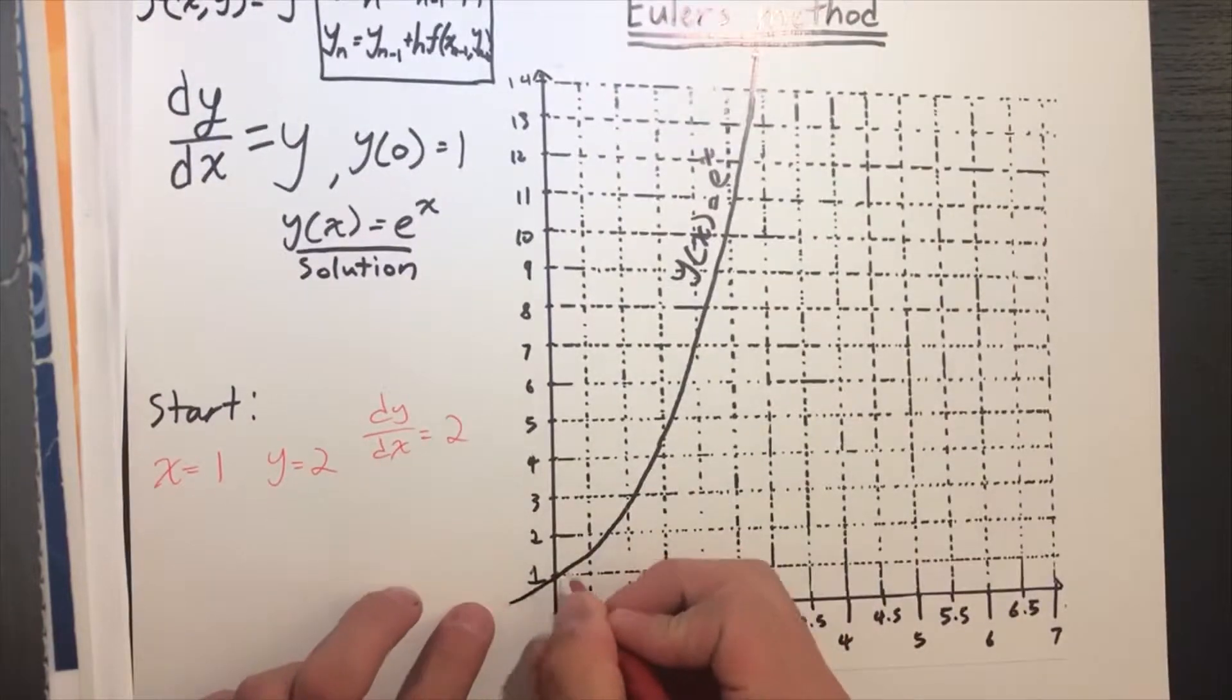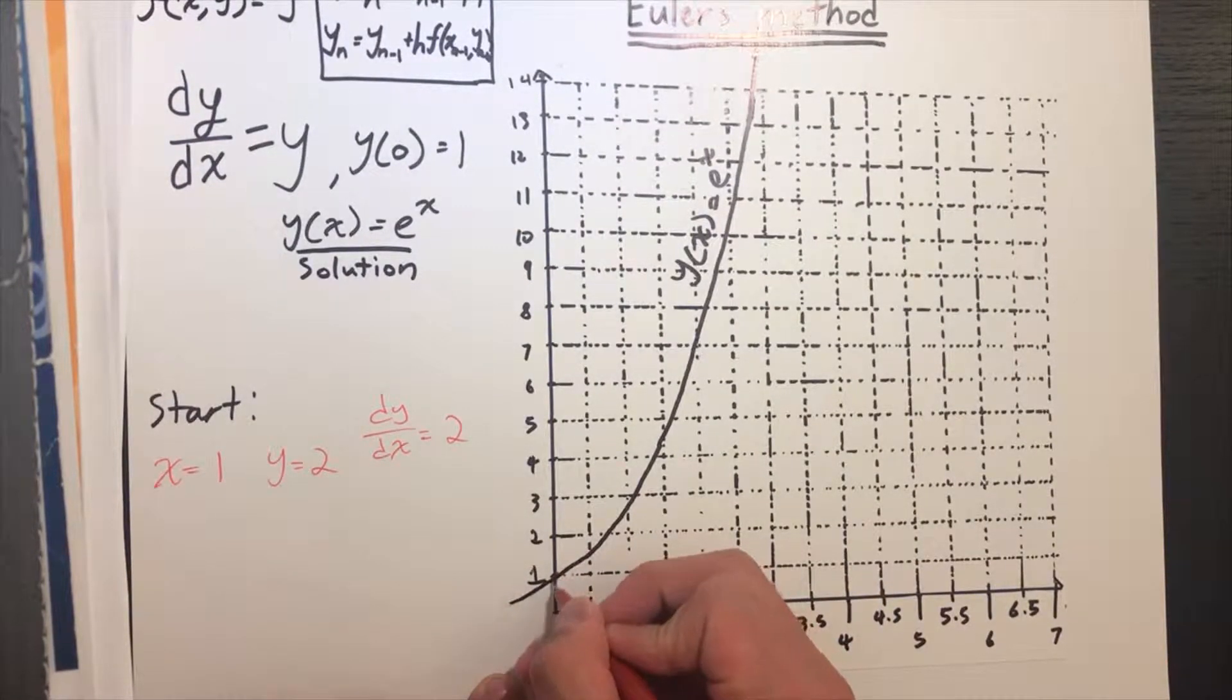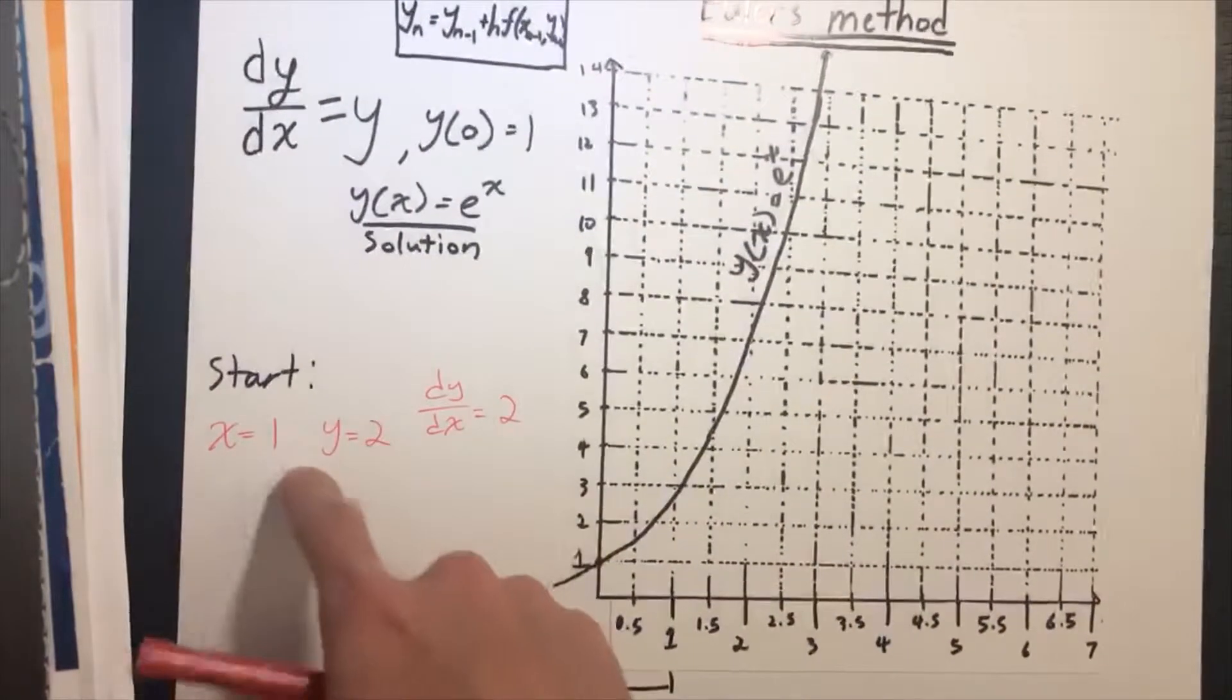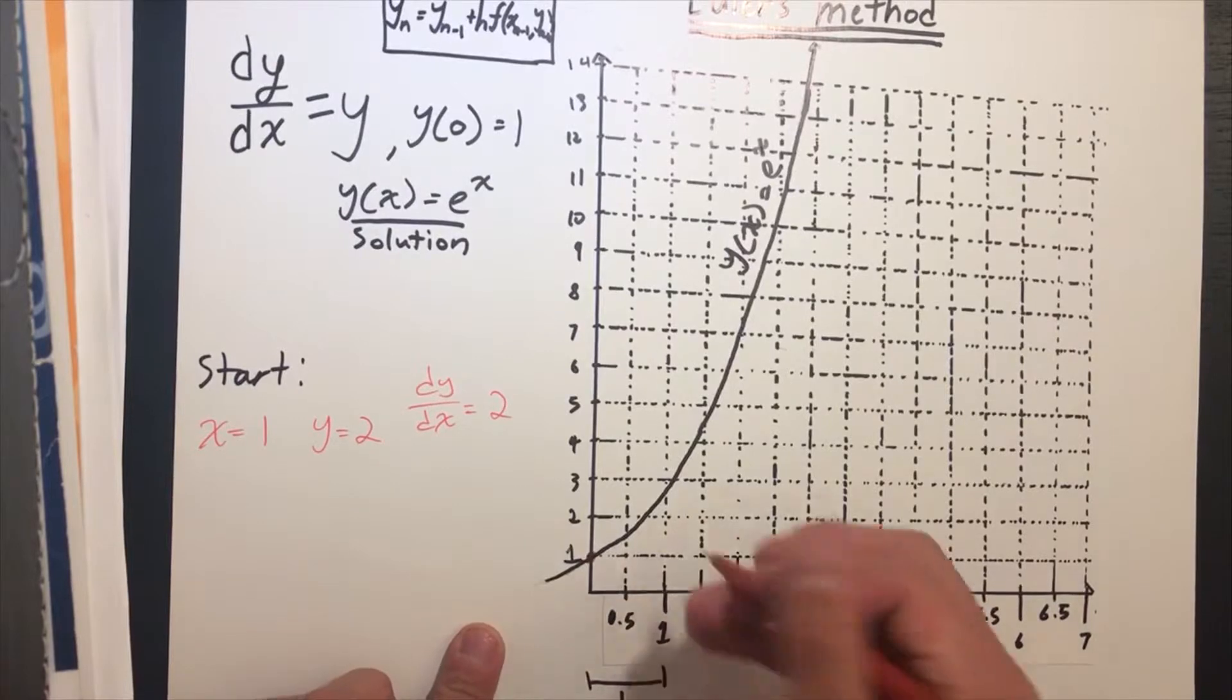Now let's plot the graph. When x = 0, y = 1—that's our first point. From this, we found that when x = 1, y = 2, so we put it here.